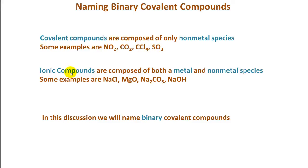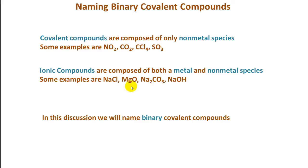Now, ionic compounds are composed of both a metal and a non-metal species. Some examples are sodium chloride, magnesium oxide, sodium carbonate, and sodium hydroxide. Notice that these all contain a metal atom with a non-metal species.